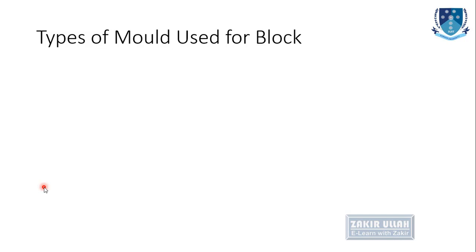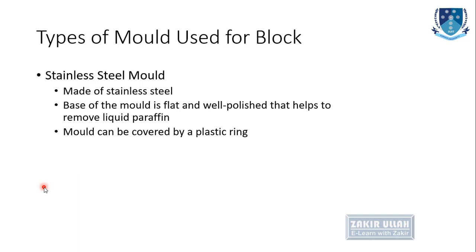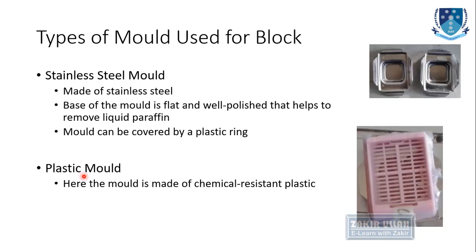The different types of molds used for blocking of tissue: the stainless steel mold is made from stainless steel. The base of this mold is flat and well polished, so when liquid paraffin is removed from it, it does not create any distortion and the paraffin has an even surface. The mold can be covered by a plastic ring. Another type of mold is made of chemical-resistant plastic. These stainless steel molds come in different sizes — medium, larger, and small sizes for smaller tissue. There is also a plastic cassette mold.